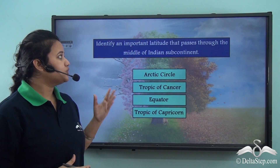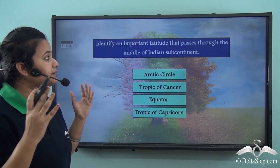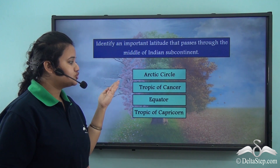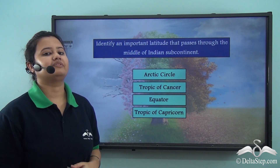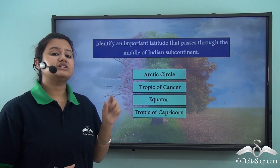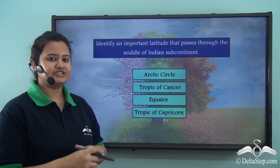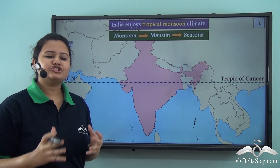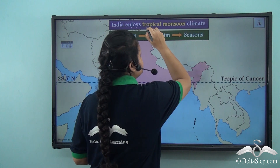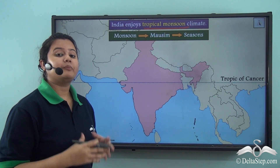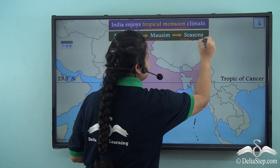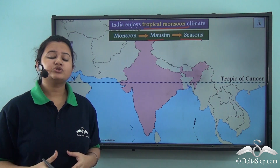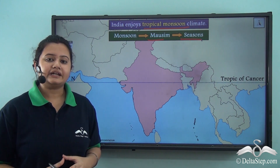Before proceeding, let us answer this question: we need to identify the important latitude that passes through the middle of the Indian subcontinent. Is it the Arctic Circle, Tropic of Cancer, equator, or Tropic of Capricorn? The answer is the Tropic of Cancer. As mentioned, India enjoys tropical monsoon climate. The word monsoon originates from the Arabic word 'mossum,' which literally means season. Monsoon also implies the seasonal reversal of winds, which we shall read about later while discussing the Indian monsoon.